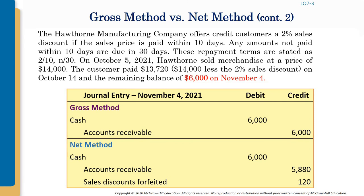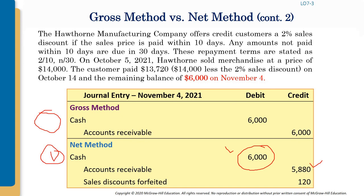For the payment on November 4 of the remaining $6,000: under the gross method, cash is debited and accounts receivable is credited for $6,000. Under the net method, we are receiving the full $6,000 cash on November 4 because the buyer paid after the discount period. Accounts receivable is recorded at 98% of $6,000, and the remaining 2% of $6,000 represents the sales discount that has been forfeited because the buyer failed to pay within 10 days.